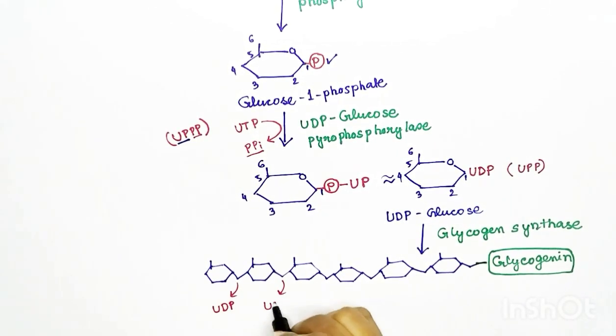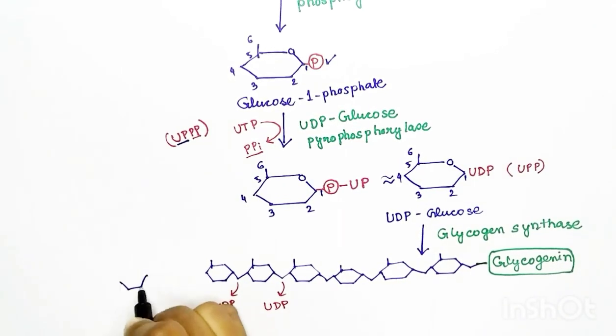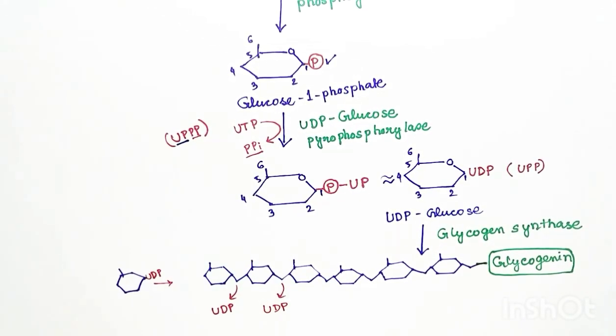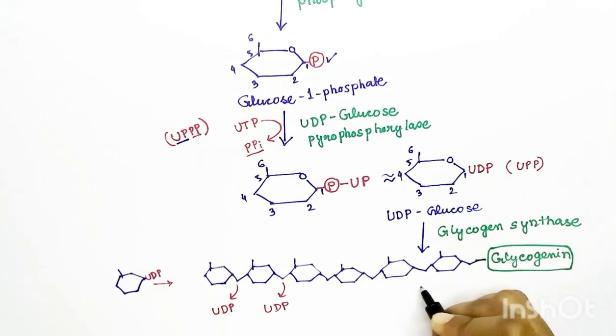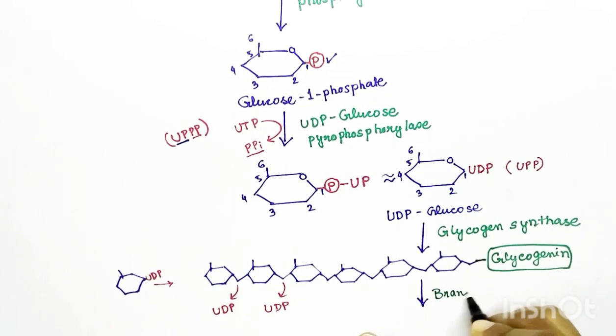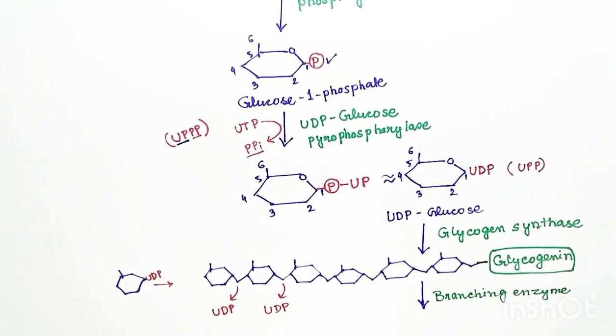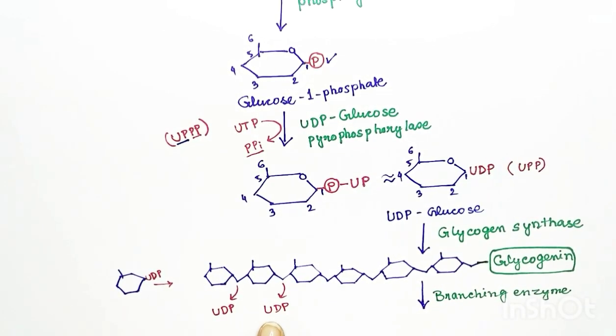The enzyme used for this is glycogen synthase. When one UDP-glucose attaches to the glycogen chain, the UDP gets released and the glucose adds up in the chain of glycogen. Now for branching, the enzyme used is branching enzyme.